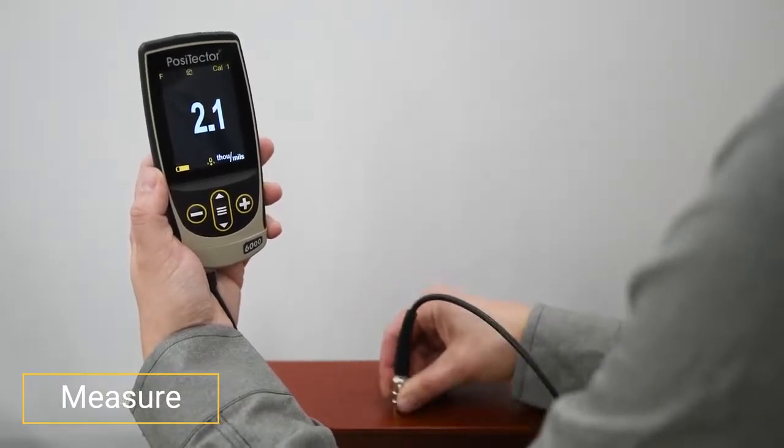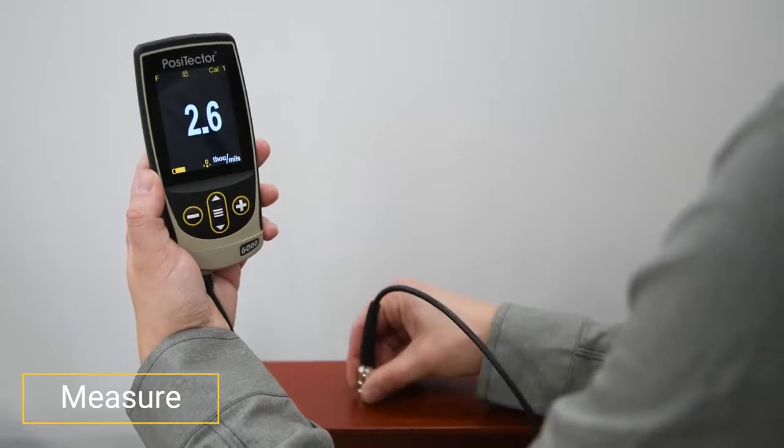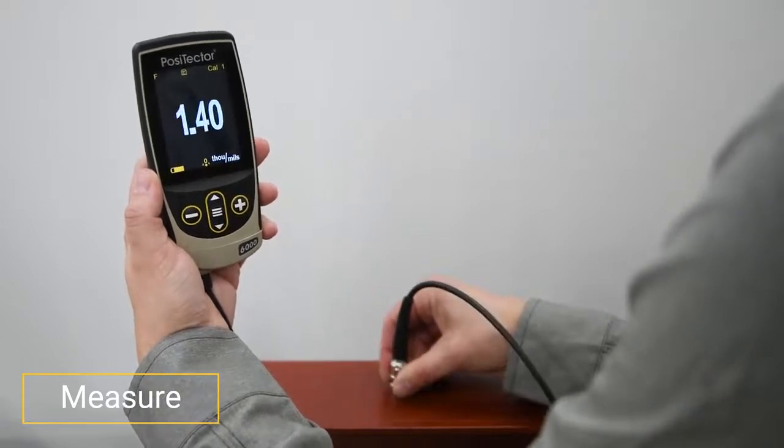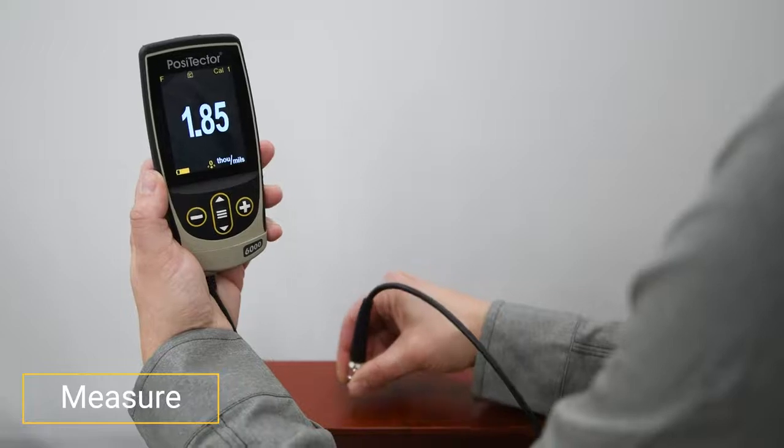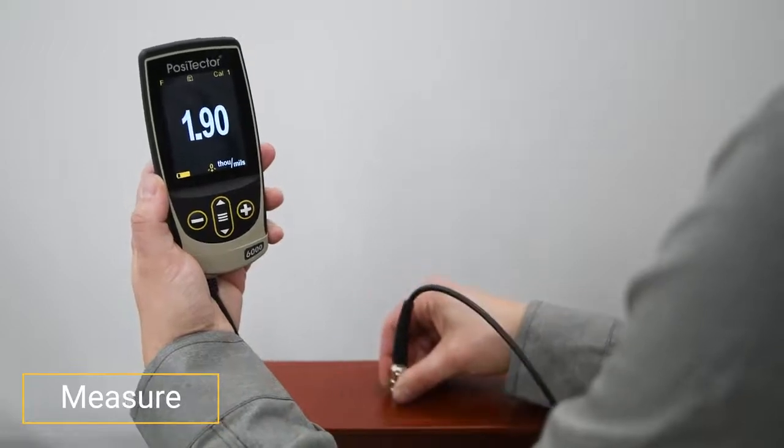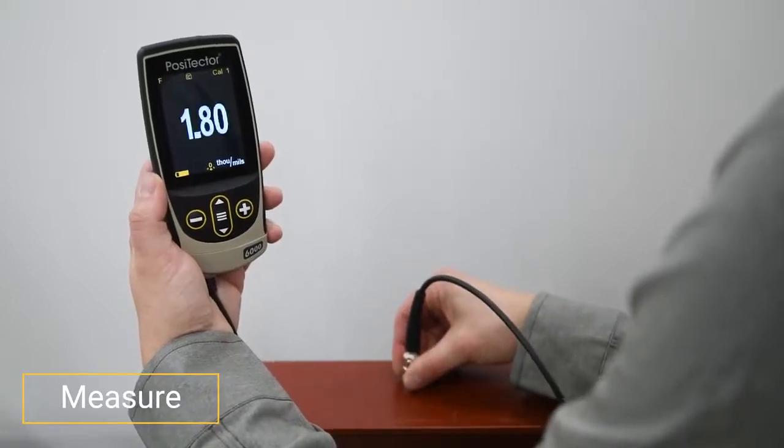Repeated gauge readings, even at points close together, often differ due to surface irregularities in the coating and substrate. For the most meaningful results, it is recommended to take an average of several readings.